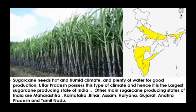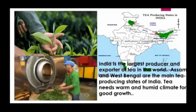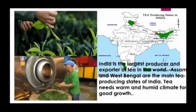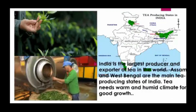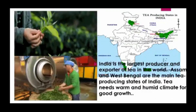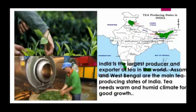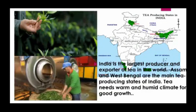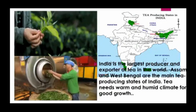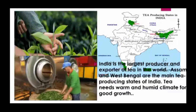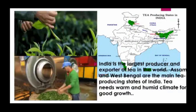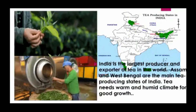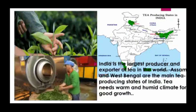India is the largest producer and exporter of tea in the world. Assam and West Bengal are the main tea-producing states of India. Tea needs a warm and humid climate for good growth.